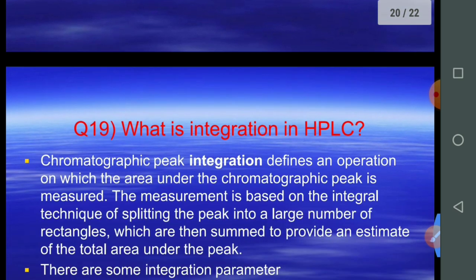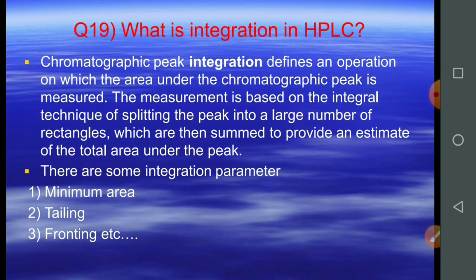Question number nineteen: what is integration of an HPLC chromatographic peak? Peak integration is defined as an operation in which the area under the chromatographic peak is measured. The measurement is based on the integral technique of splitting the peak into a large number of rectangles which are then summed to provide an estimate of the total area under the peak. Some integration parameters include minimum area, tailing, and fronting.